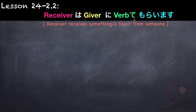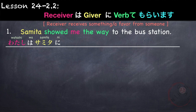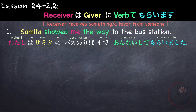Next is the pattern verb-te moraimasu. The topic is the receiver, showing the receiver's gratitude for the giver. Example: Samita showed me the way to the bus station. Using moraimasu, the receiver comes first: watashi wa, Samita ni, basu noriba made, annai shite moraimashita.